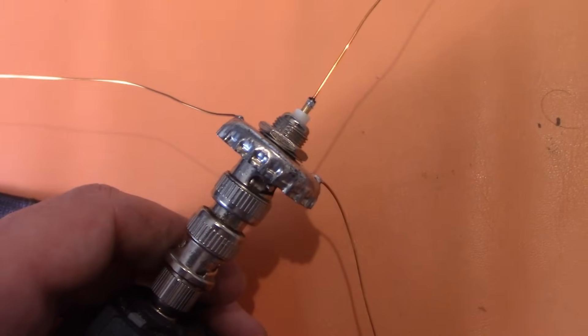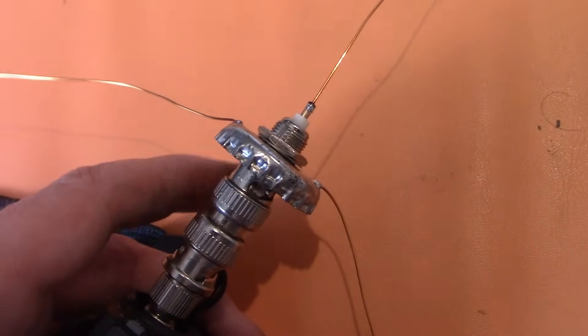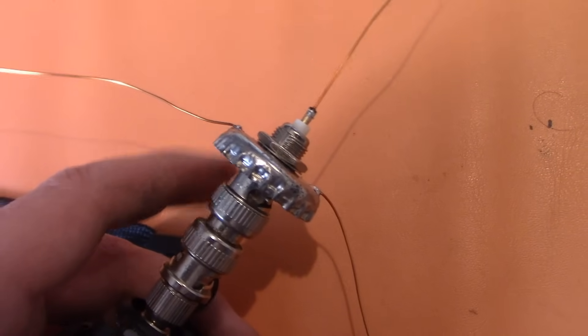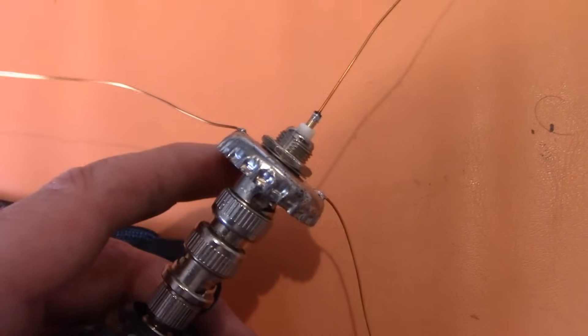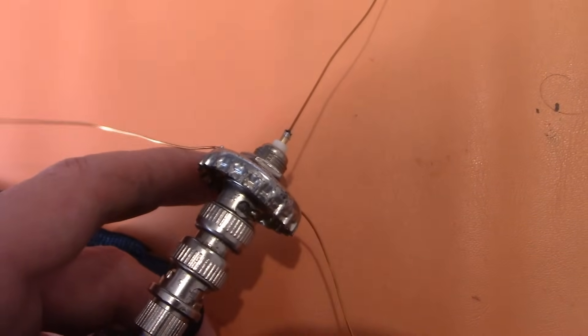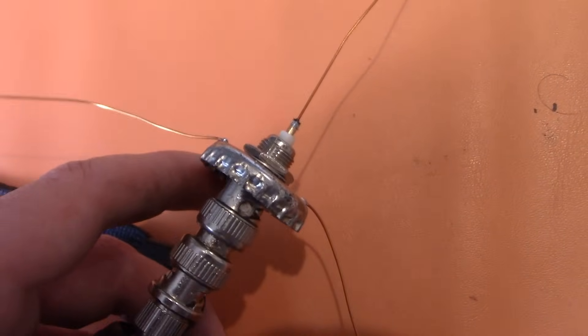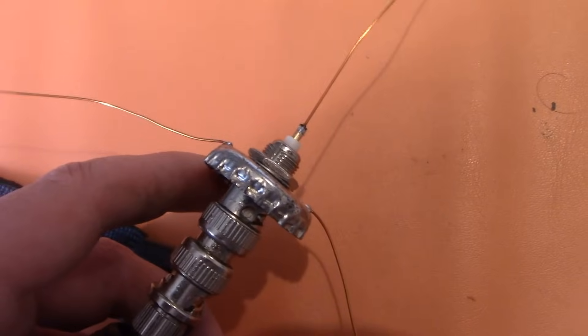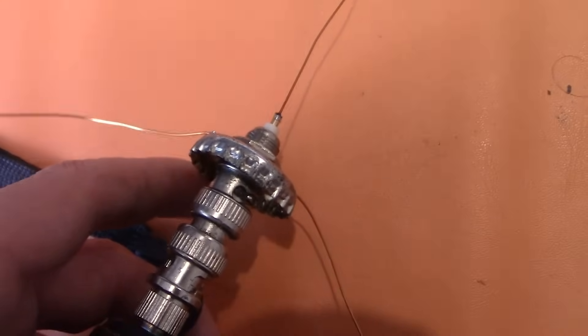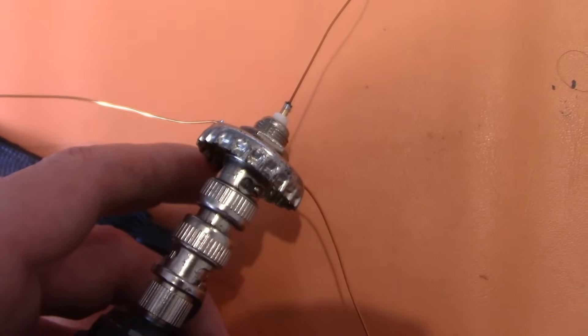These are 16 to 18cm long. If you want to operate this on a higher frequency, like the 476MHz CB band we have in Australia, then these need to be maybe 2cm shorter. Conversely, for a lower frequency, like 144, 146MHz, these need to be longer, around 48cm.